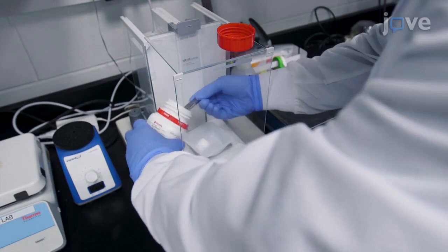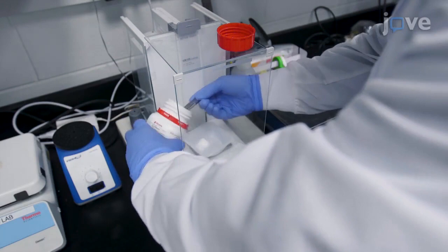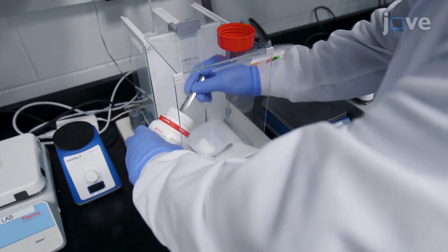To prepare the vehicle solution, dissolve 3.375 grams of beta-cyclodextrin in 750 milliliters of tap water in a 1-liter screw-top glass container.